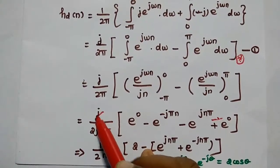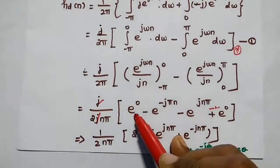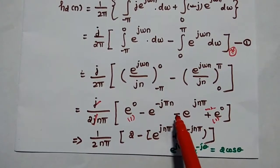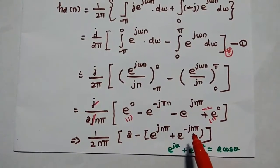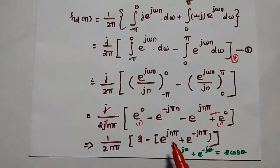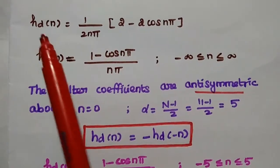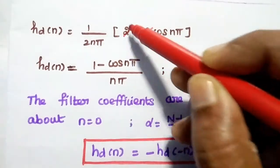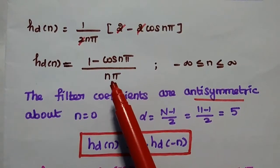After dividing by j, e^0 equals 1. We can then write e^(jnπ) plus e^(−jnπ), which is in the form e^(jθ) plus e^(−jθ) equals 2 cos θ, so this term becomes 2 cos(nπ). Therefore hd(n) equals 1 over 2nπ times (2 minus 2 cos(nπ)), which simplifies to hd(n) equals (1 minus cos(nπ)) divided by nπ.